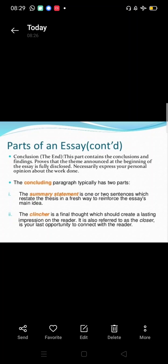The concluding paragraph typically has two parts: the summary statement in one or two sentences which restate the thesis in a fresh way to reinforce the essay's main idea. The clincher is a final thought which should create a lasting impression on the reader. It is also referred to as the closer and is your last opportunity to connect with the reader. It means you are telling your final judgment or what you are thinking about the topic.